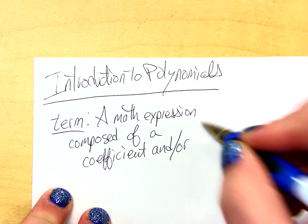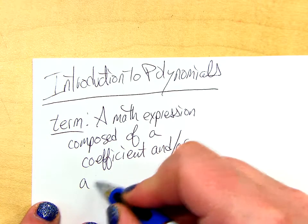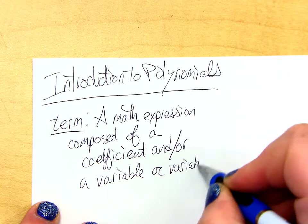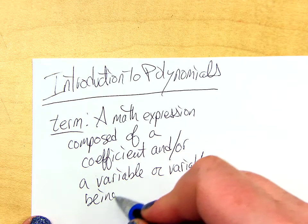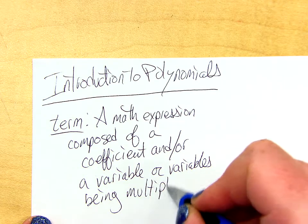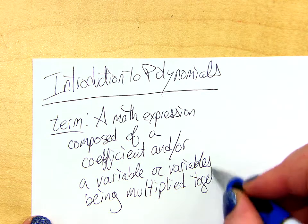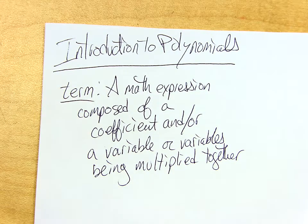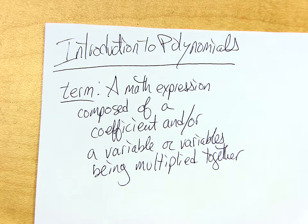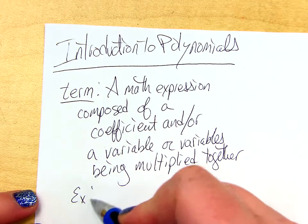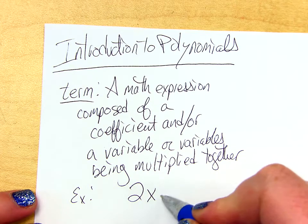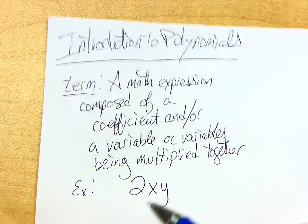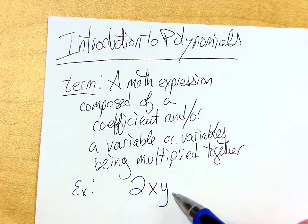And, or, a variable or variables being multiplied together. So, some examples of terms would be, oh, like, 2xy. That's a single term. So, it has a number, and it has, in this case, two variables, but they're all being multiplied together.